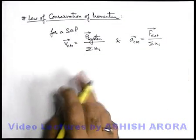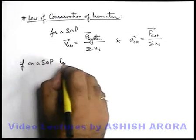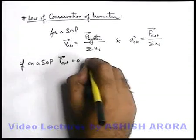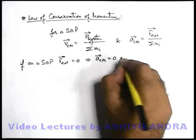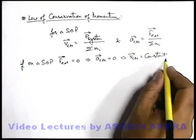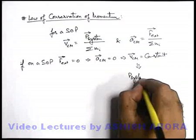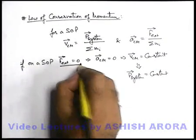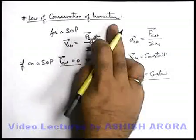Now in this situation, we follow a sequence: if on a system of particles the external force F_external is equal to zero, that means no external force is acting on the system. This means the acceleration of the centre of mass will be equal to zero. If acceleration of the centre of mass is zero, this implies that the velocity of the centre of mass will remain constant — obviously, no acceleration implies no change in velocity. Now if velocity of the centre of mass is constant, this means the system momentum will remain constant. So we can state: if no external force is acting on a system of particles, the total momentum of the system will remain constant. This concept is called the law of conservation of momentum.